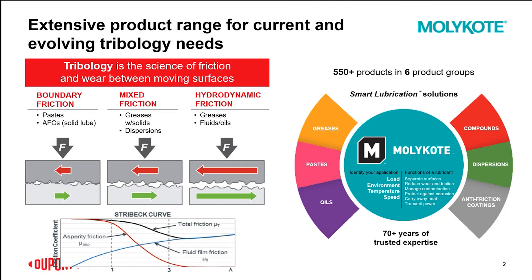Hydrodynamic friction is where we're able to have a separation of the two substrates, typically due to low loads and high speed applications. On the boundary friction side, we usually have high loads and low speed applications where we're going to have surface-to-surface contact, and getting separation is going to be difficult. In the middle, we have mixed friction, which is everything in between. We're going to focus on the boundary friction side, which is typically where you're going to use pastes and AFCs.